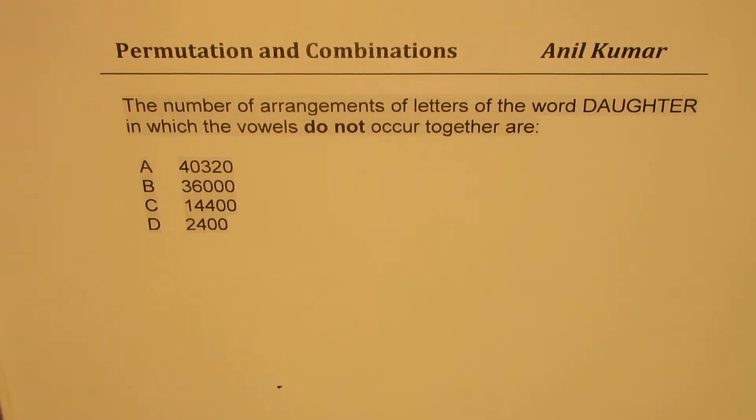I'm Anil Kumar sharing with you one of the most popular questions on permutation and combination. Most of the time we get wrong solutions for this particular question. In this video, I will not only discuss the correct solution, but I will also talk about how we end up getting wrong solutions. The question here is: the number of arrangements of letters of the word DAUGHTER in which the vowels do not occur together. Four choices are given to you.